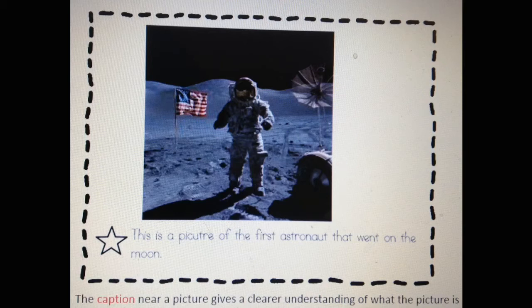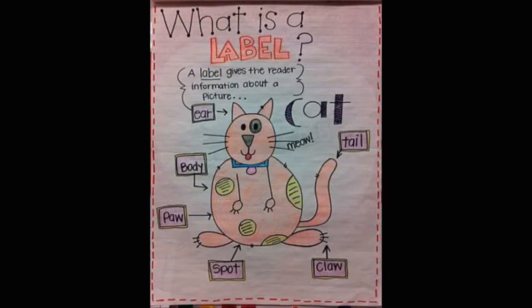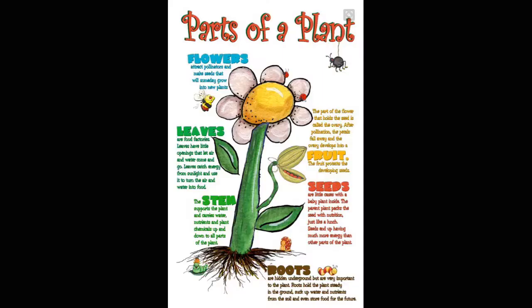Many pictures will also include a label. Labels are similar to captions, but they describe a specific item in the picture. For example, the caption in this picture is 'cat,' but the specific details like tail, body, or claw give the label for the picture.